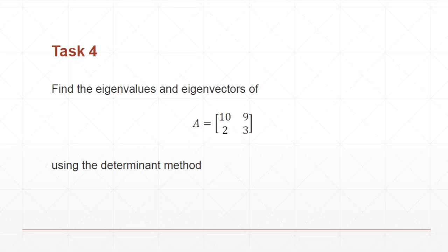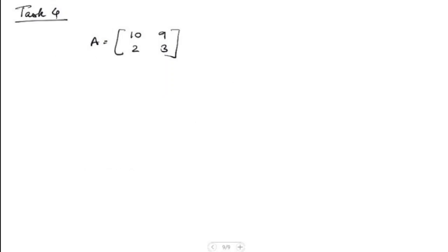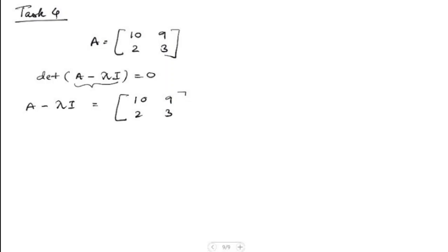Let's start doing Task 4 now. Here we have to find out the eigenvalues and eigenvectors of a 2x2 square matrix A given to us using the determinant method. We have to first use the characteristic equation, that's: determinant of (A minus lambda times I) is equal to 0. So let's calculate first A minus lambda times I. A is the matrix [10, 9; 2, 3] minus lambda times the identity matrix [1, 0; 0, 1].